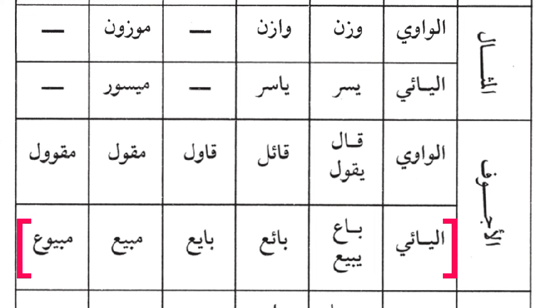The performer of the action is 'ba'i'un', a seller, whose original form is 'bayi'un'. And 'mabi'un' means the commodity that is being sold, with its original form being 'mabyu'un'.